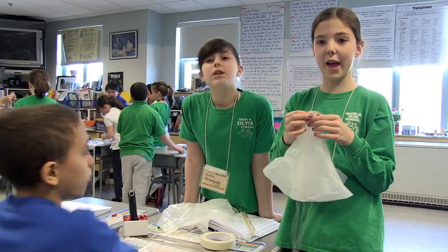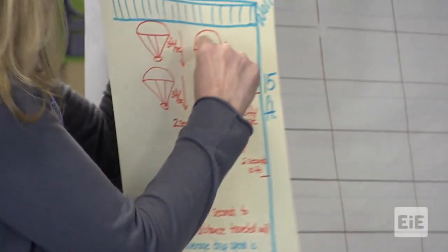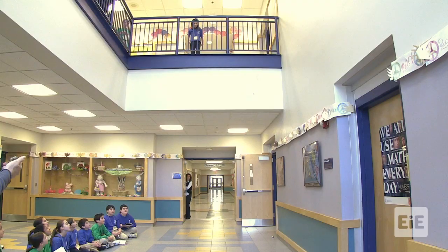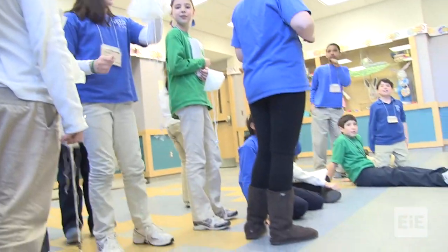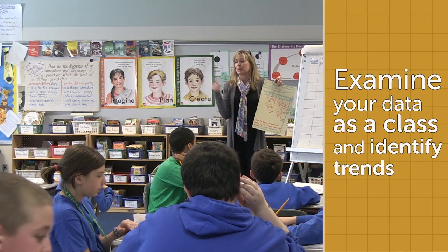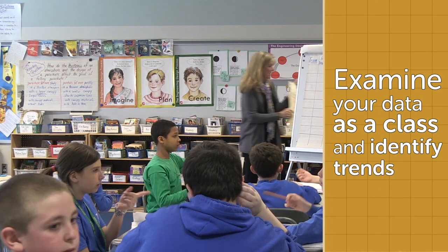In this next clip, students are designing a parachute to land a payload on another planet. The goal is for the parachutes to fall slowly. Students dropped their parachutes down a stairwell three times and calculated their average drop speed. The students in this class have already done several EIE units and have experience analyzing data in both engineering and math. As Jean collects data from the groups, she pushes her students to think about their classmates' data and identify trends.